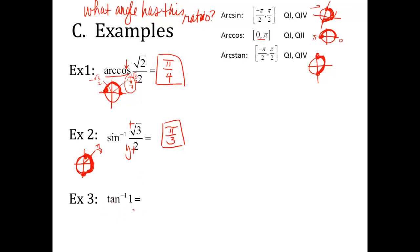Example: arc tangent of 1. Tangent's limitations go from quadrant 1 to quadrant 4. Tangent is always y divided by x, so if tangent equals 1, the y and x values are the same. They're both positive in quadrant 1. Looking for angles in quadrants 1 and 4 where x and y have the same value and sign — that's pi over 4. The answer is pi over 4.